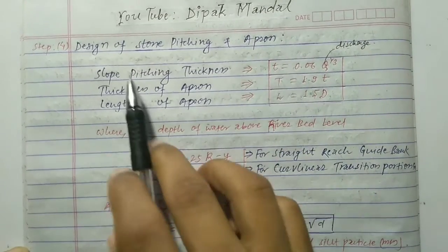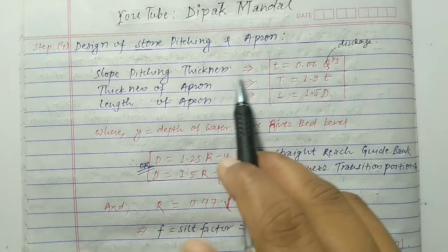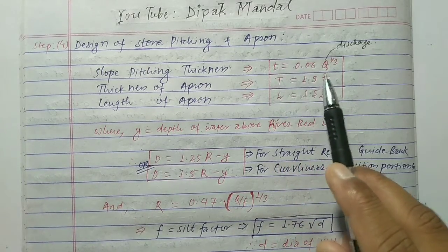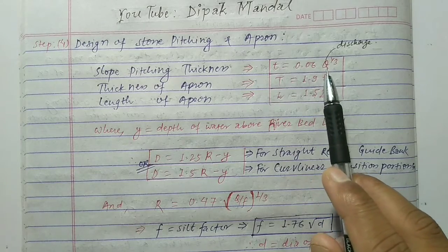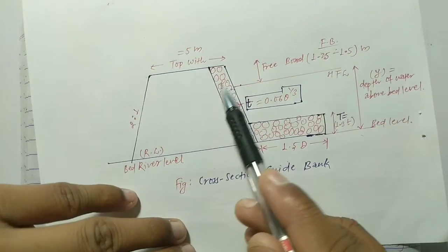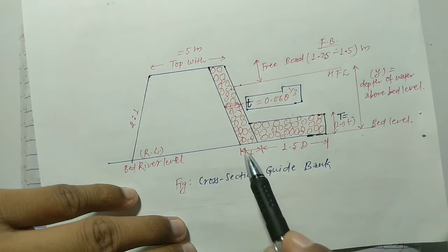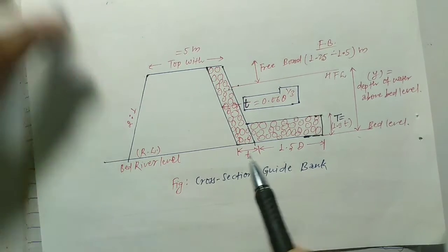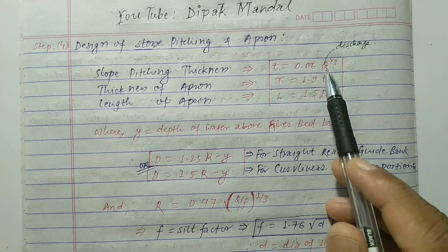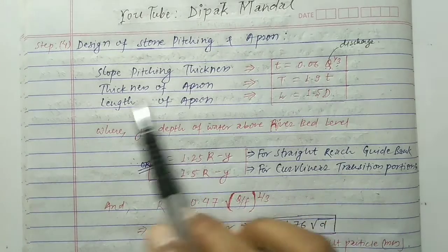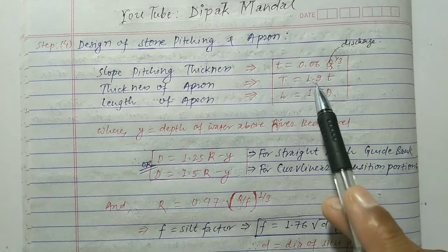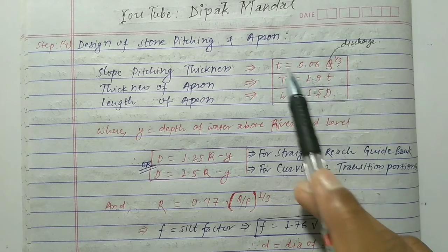In step four, we design the stone pitching and apron. For the slope pitching thickness, we use the formula: t = 0.06 × Q^(1/3). Here small t is the slope pitching thickness — this is the thickness along the slope. After using the given discharge, we get the value of small t. Then the thickness of the apron, capital T, is calculated as T = 1.9 × t.